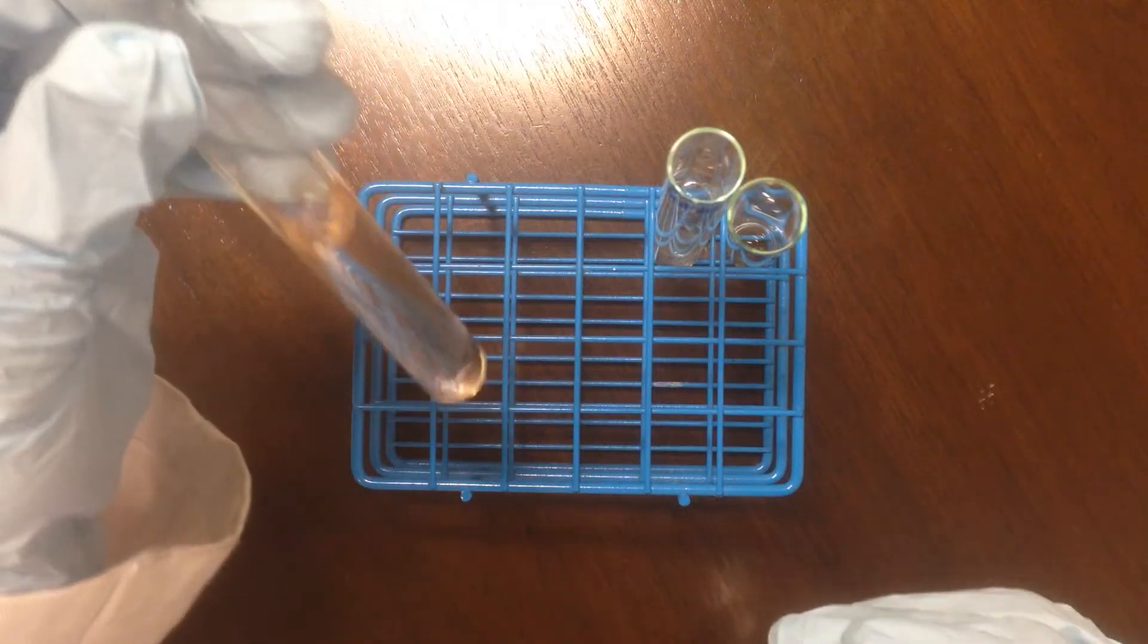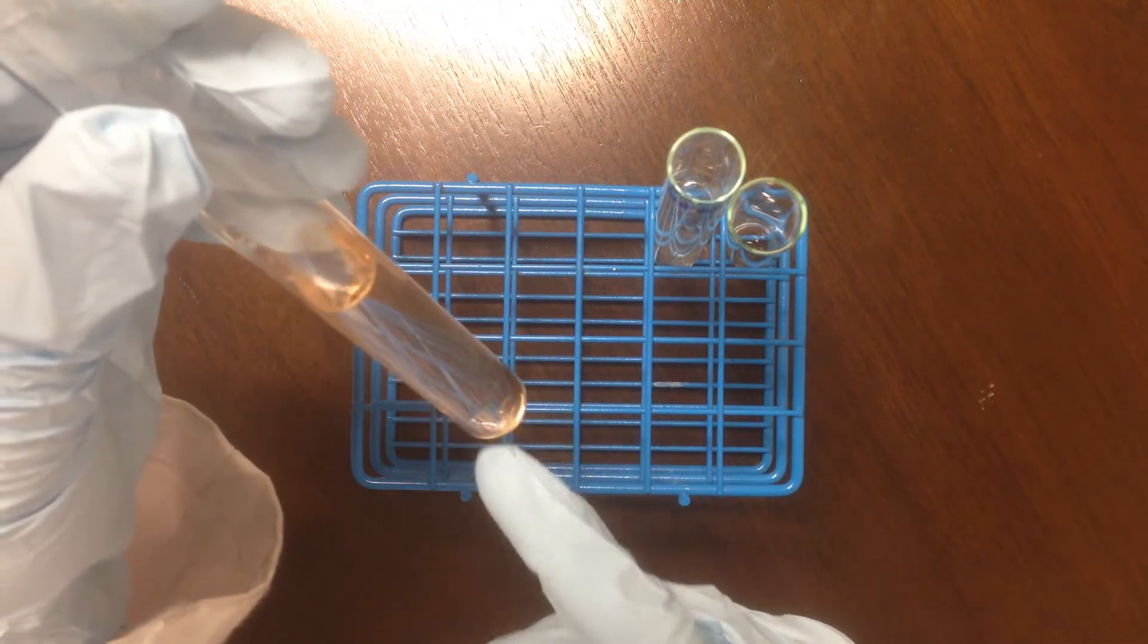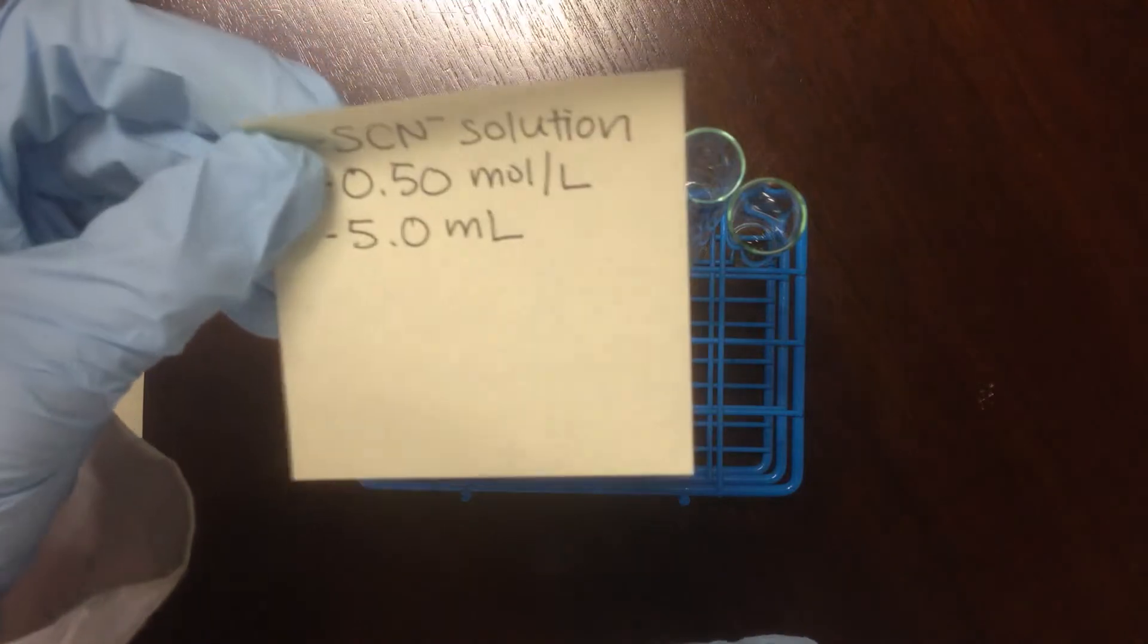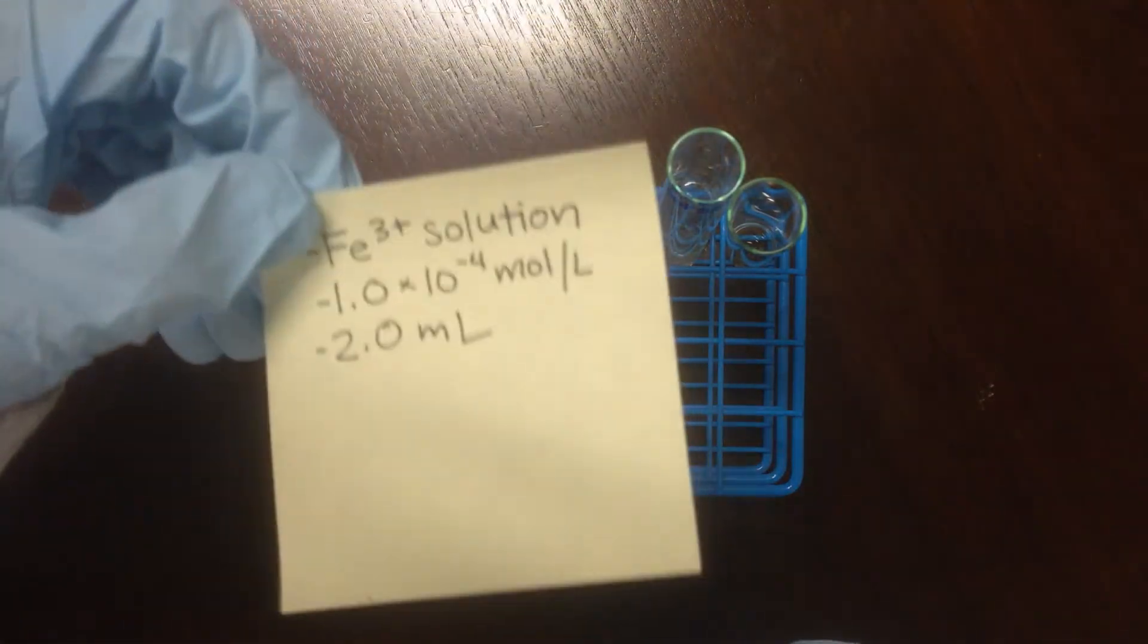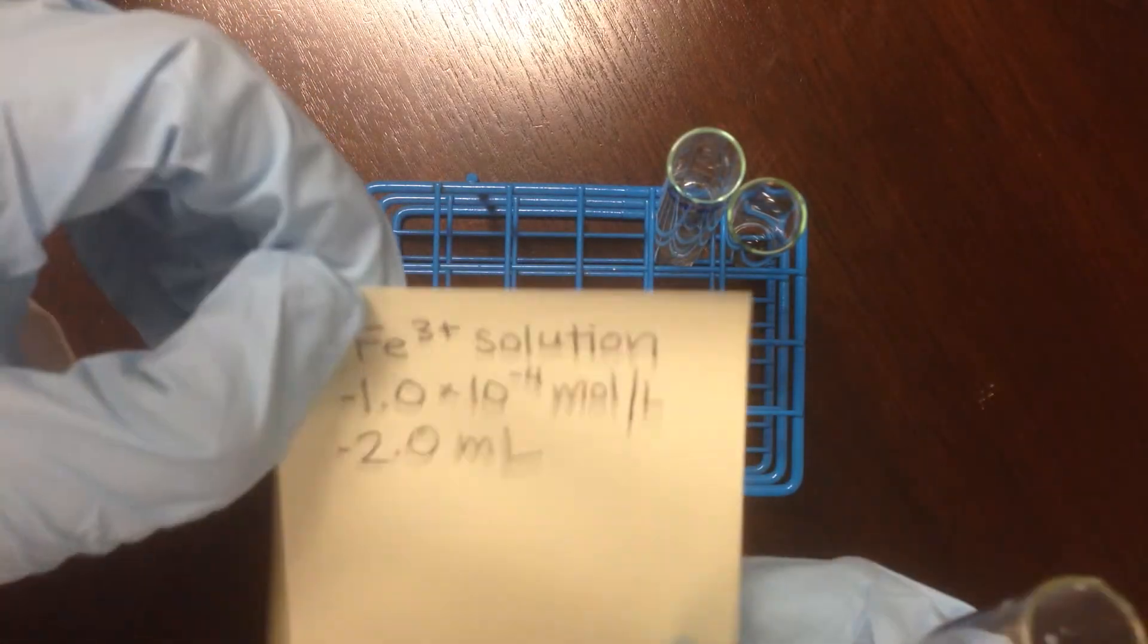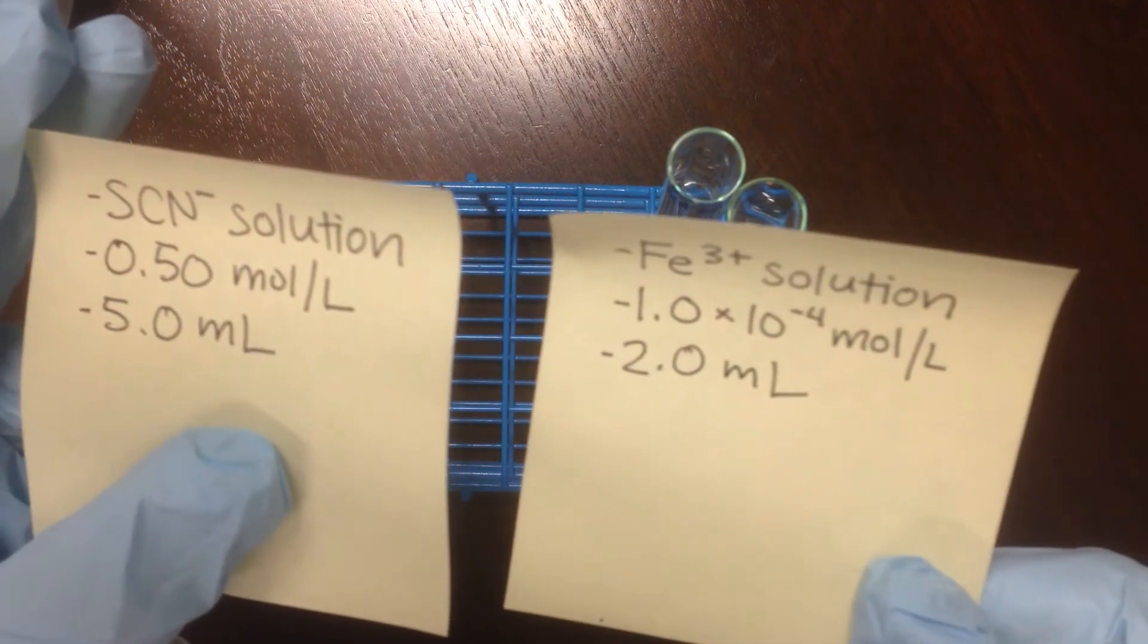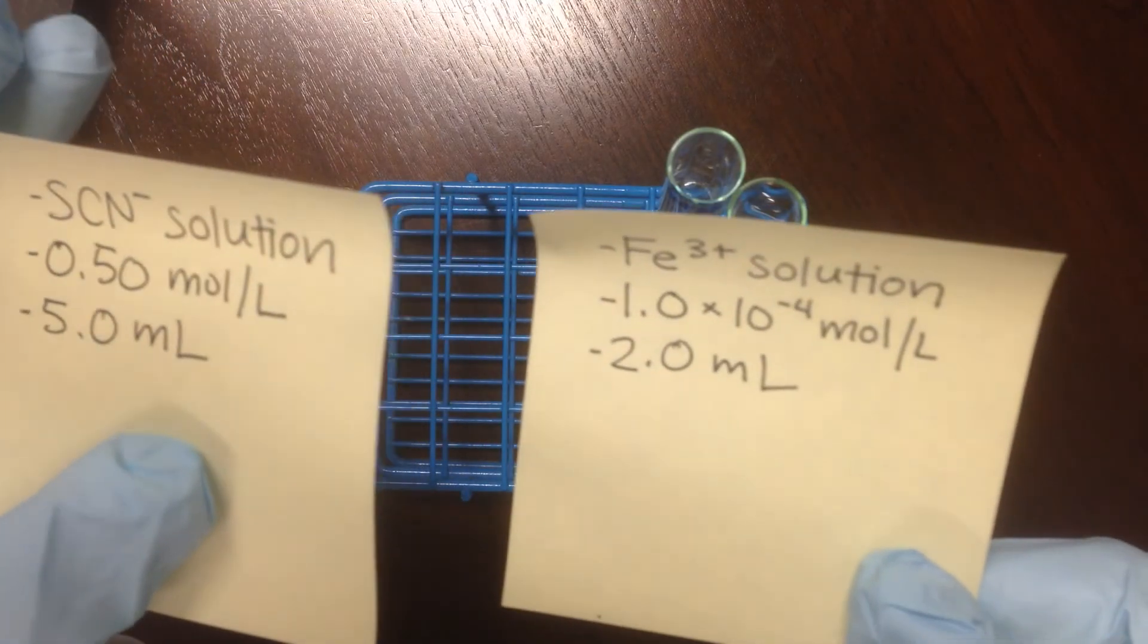The problem associated with this video is going to ask you to calculate the concentration of product in this test tube. Keep in mind that we use the concentrated thiocyanate solution while we used a much more dilute solution of iron(III) cation. These two reactants are present in very different concentrations, and that leads to an interesting situation from an equilibrium perspective and a simplification that allows us to calculate the product concentration fairly easily.